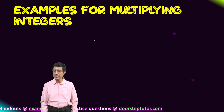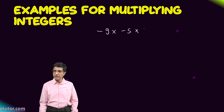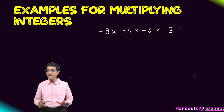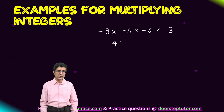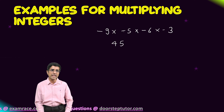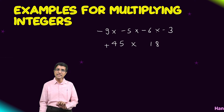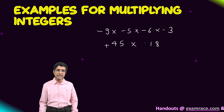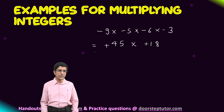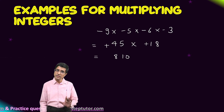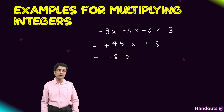Here is a simple example: minus 9 into minus 5 into minus 6 into minus 3. First, just do the multiplication without looking at the signs. 9 fives are 45. Because both were negative, the answer turns out to be positive — they cancel each other out. Then 45 into 6 is... wait, we look at sign: minus 6 and minus 3 multiply to give plus 18. Now we have two positive numbers: 45 into 18 equals 810. So the final answer is positive 810.